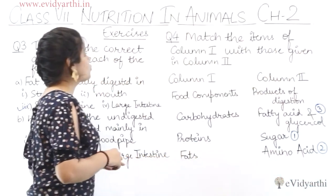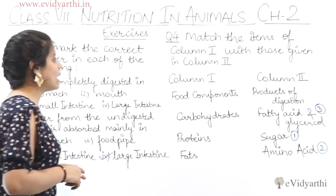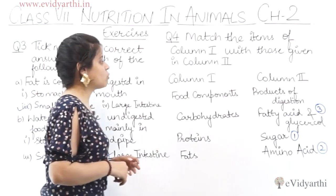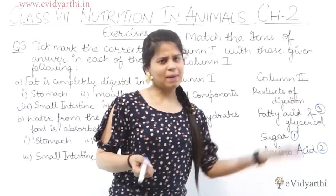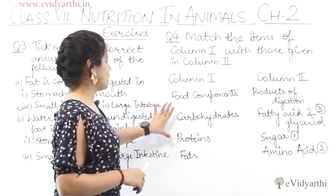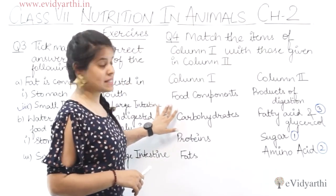Then moving to the fourth question: match the items of column 1 with those given in column 2. You have 4 components in column 1, and in column 2 you are given the products of digestion.